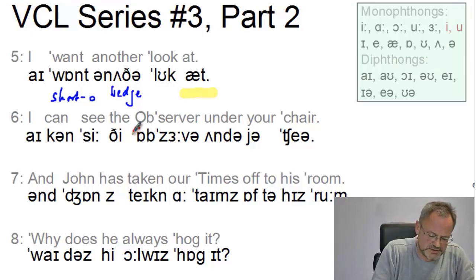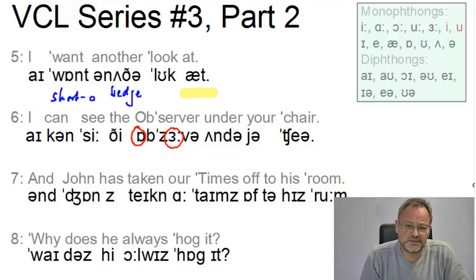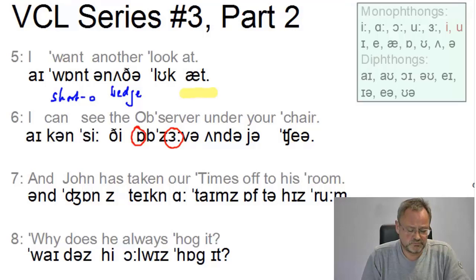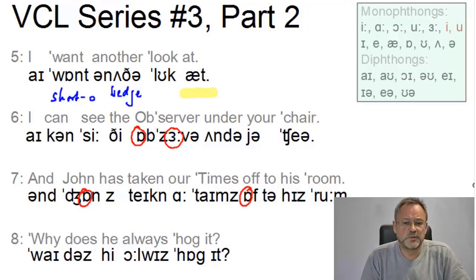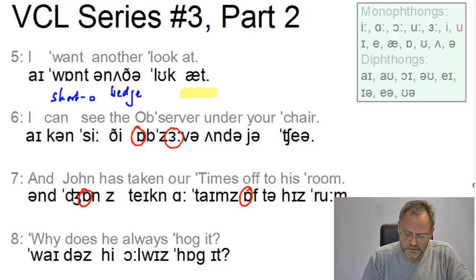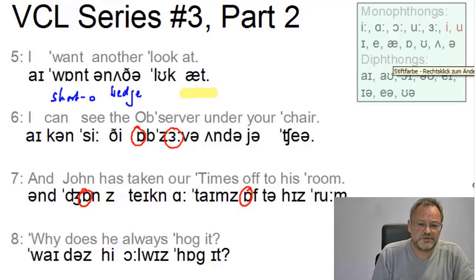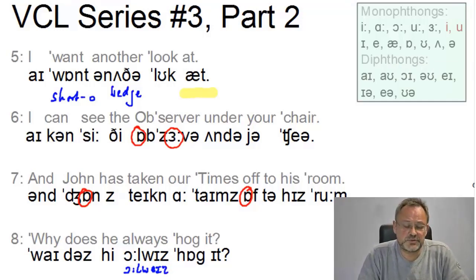A common source of mistakes is of course these two vocalic symbols. If you compare them with the system of monophthongs, it is in fact the only possibility of starting 'observer' with a short o, then having the mid-high central long vowel ɜː in '-server'. Line seven: 'John's taken our Times off to his room.' The vowel in 'John' and 'off' is of course the short o. Line eight: 'And why does he always hog it?' For 'always' we have alternatives — we can either use the ɔː as shown, or alternatively transcribe it with a diphthong. Both are acceptable.